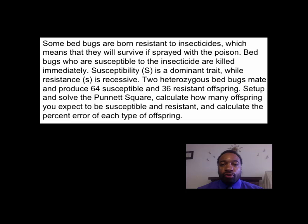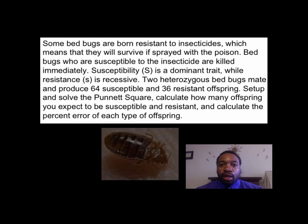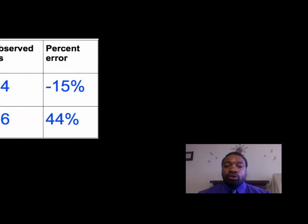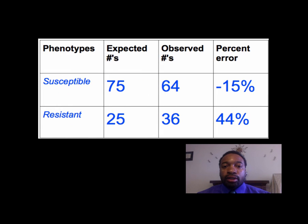Take a moment to read over the problem and solve it. Once you have calculated the percent error of the susceptible and the resistant bed bugs, unpause the video to continue. At this point, you should have calculated that the percent error of the susceptible bed bugs is negative 15 percent, and the resistant bed bugs is positive 44 percent.